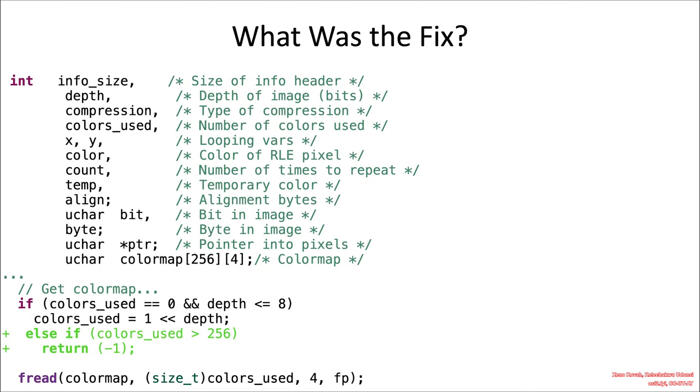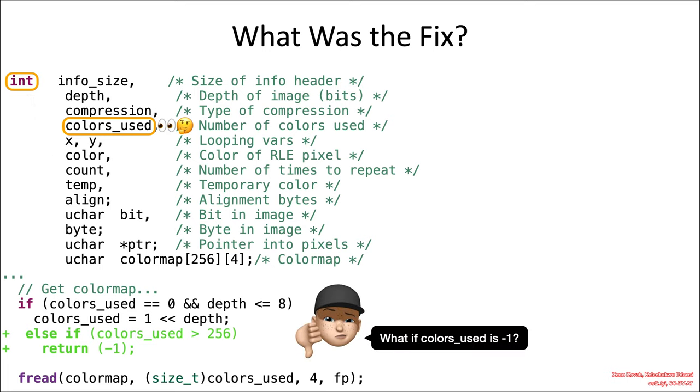All right, so what was the fix for this? You can see that they added a sanity check on colors used. And colors used, though, is a int, a signed integer. So does the sanity check work? No, it does not. What if colors used was negative 1? So basically, if it was, colors used, it is a signed int. So we're going to assume it's 32 bits here. And so if that was negative 1, it would be all Fs. But it would pass this sanity check just fine. Is negative 1 greater than 256? No, it's not.